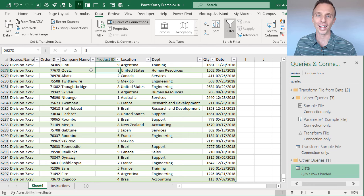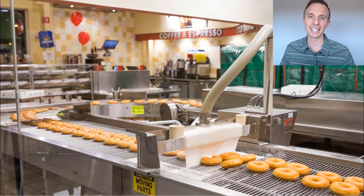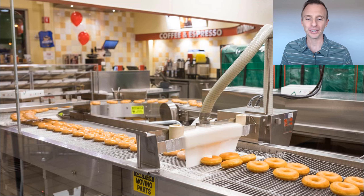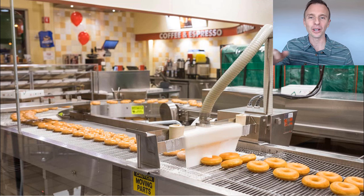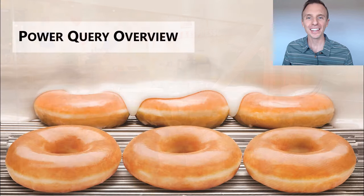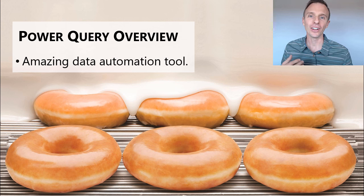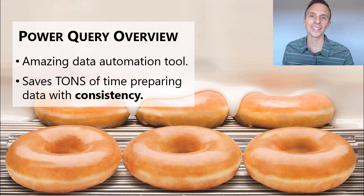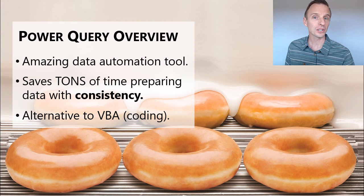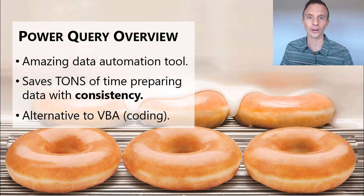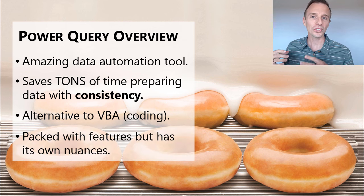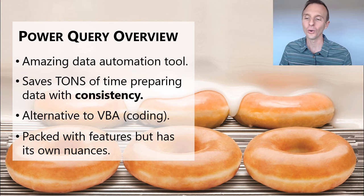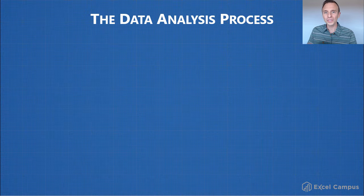I showed a picture of a donut earlier because I like to think of Power Query as a donut machine — you put ingredients in one end and out come perfect donuts on the other end. That's exactly what Power Query does: it takes our data, automates the process, and does it with consistency, which saves time and reduces errors. It can also be used as an alternative to VBA — it doesn't replace VBA, but there are tasks you can use Power Query for instead.